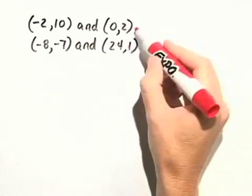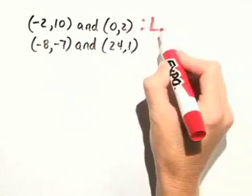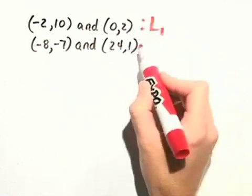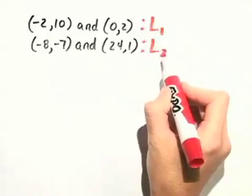Let's call the line joining this first pair of points L sub 1, and let's call the line joining the second pair of points L sub 2.